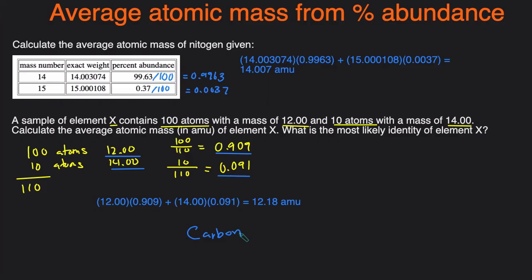That's how you calculate average atomic mass from percent abundances. First, make sure you have all the percent abundances — if one is missing, remember they must add up to 100, so subtract the known values from 100. Then divide everything by 100 to get decimal form. Finally, multiply each mass by its decimal and add all the products together. That gives your final answer in AMU.